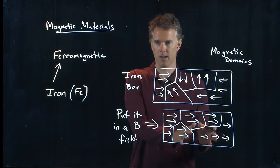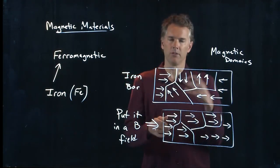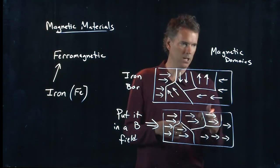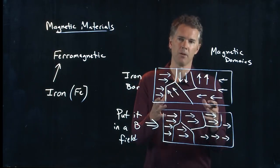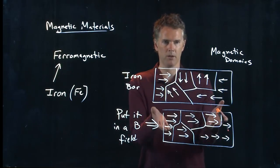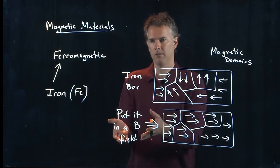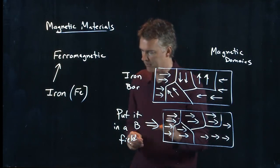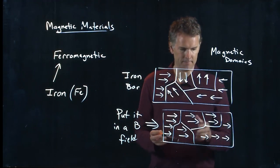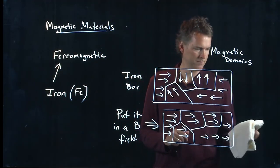Now you can scramble it up by applying a B field in a different direction, or you can heat up the bar and that will scramble them up. So there's various ways to deprogram your magnet, but it will keep it in that direction in the absence of any scrambling. So let's see if we can use this to our advantage.